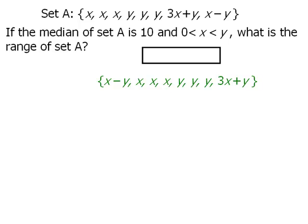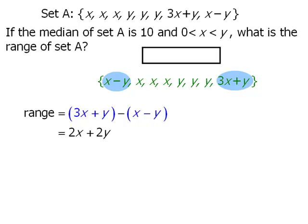Now that we have arranged set A in ascending order, we can examine the range. The range is equal to the largest number in the set minus the smallest number. The largest number in the set is 3x plus y, and the smallest number is x minus y. So the range here will equal the following. When we simplify this, we can see that the range of set A is equal to 2x plus 2y.